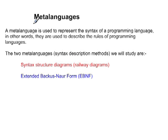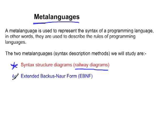So what we're looking at is meta-languages. Meta-languages is data about languages — it's a way to describe how you correctly write the syntax of a programming language. We're going to look at two tools: syntax structure diagrams, which I'll refer to as railway diagrams, and Extended Backus-Naur Form, which I'll refer to as EBNF. There's also Backus-Naur Form which used to be in the preliminary course but has been removed, so now we only have EBNF.